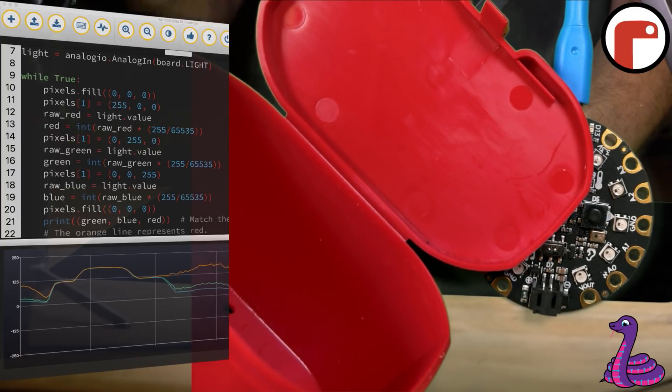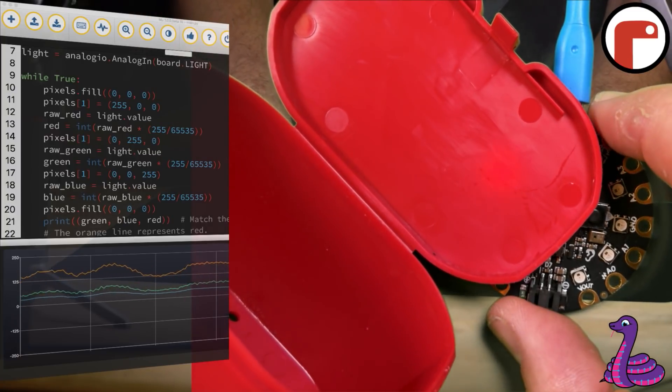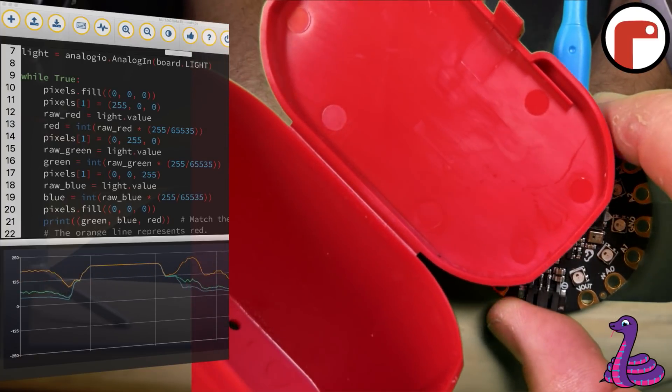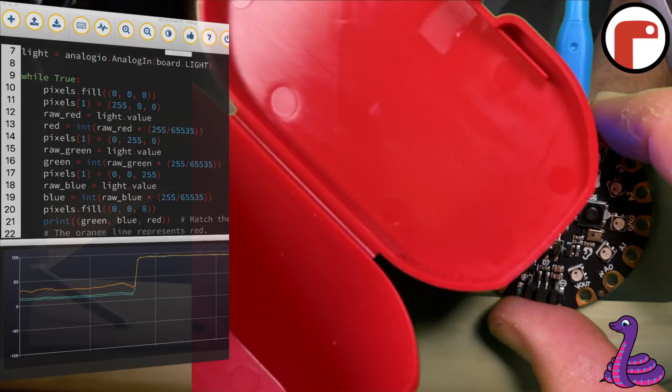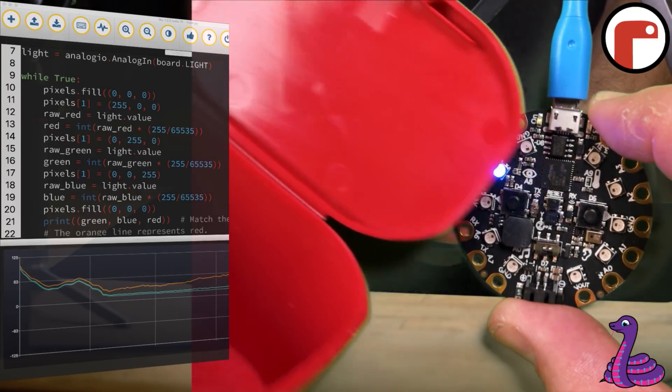Since the green and blue lights are absorbed by the box, the light sensor detects low brightness values for these colors. You can see the values are being graphed in real time on the Moo plotter. Notice how the red line is higher than the green and blue ones.